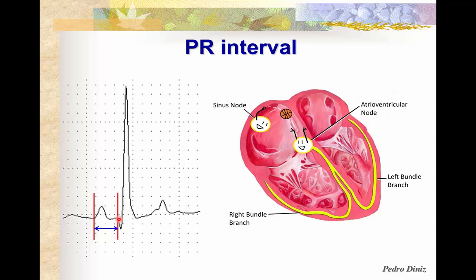Even though we call it the PR interval, we are actually measuring the PQ interval. PR intervals are very constant among every single complex in an ECG. With very few exceptions, the measurement of a PR interval should not significantly change from beat to beat. There are few exceptions, but the rule of thumb is that dramatic changes in the PR interval do not occur, except in some AV block diseases.